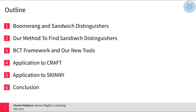I have divided my talk into six parts. I will start with giving a short introduction to boomerang sandwich distinguishers, and then I will introduce our new method to search for sandwich distinguishers for SPN block ciphers. Next, I will briefly review the BCT framework and introduce our new methods in the BCT framework. Then I will discuss the application of our methods on two lightweight SPN block ciphers, including CRAFT and SKINNY, and lastly conclude the talk by summarizing our main contributions.